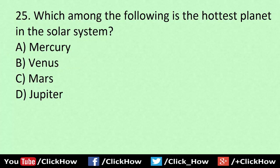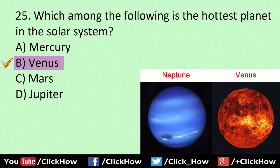Which among the following is the hottest planet in the solar system? Answer is B, Venus. Another related GK question: Neptune is the coldest planet in the solar system.